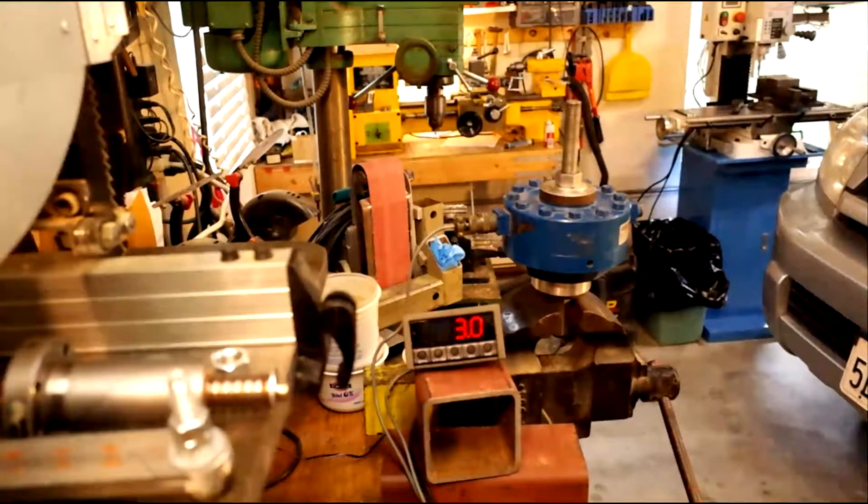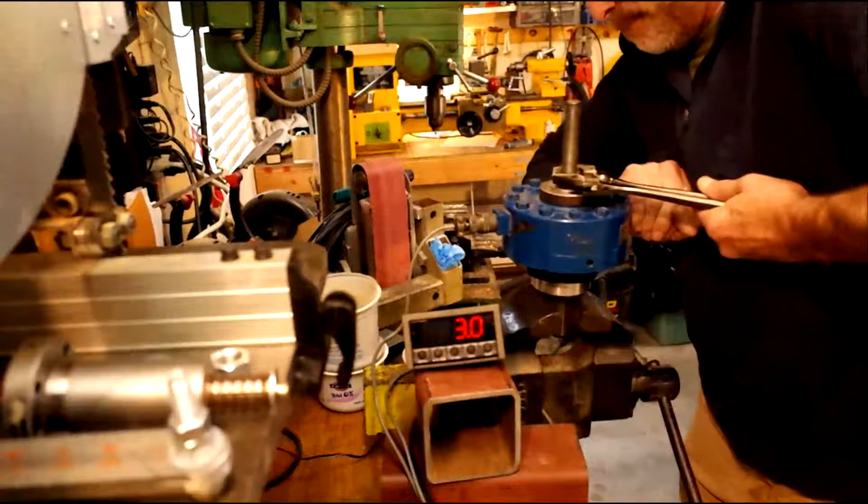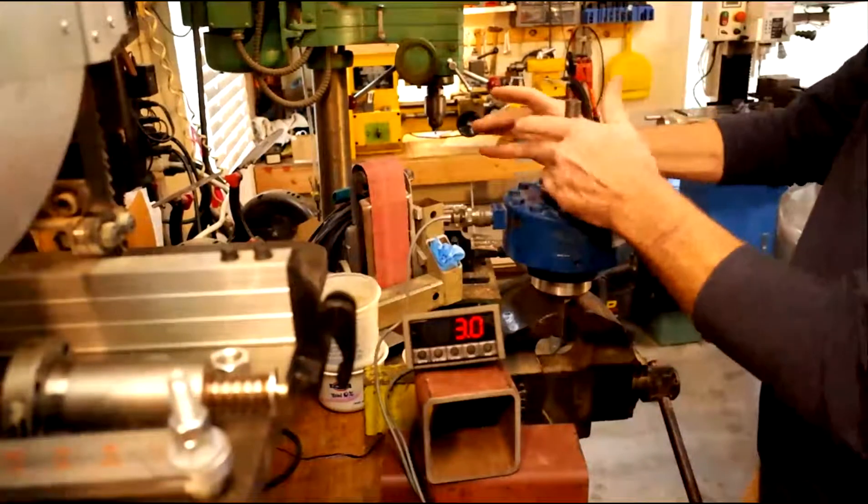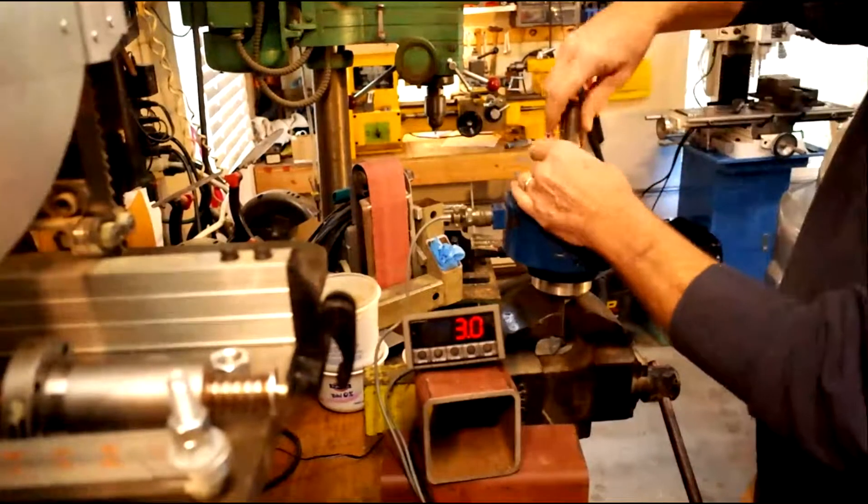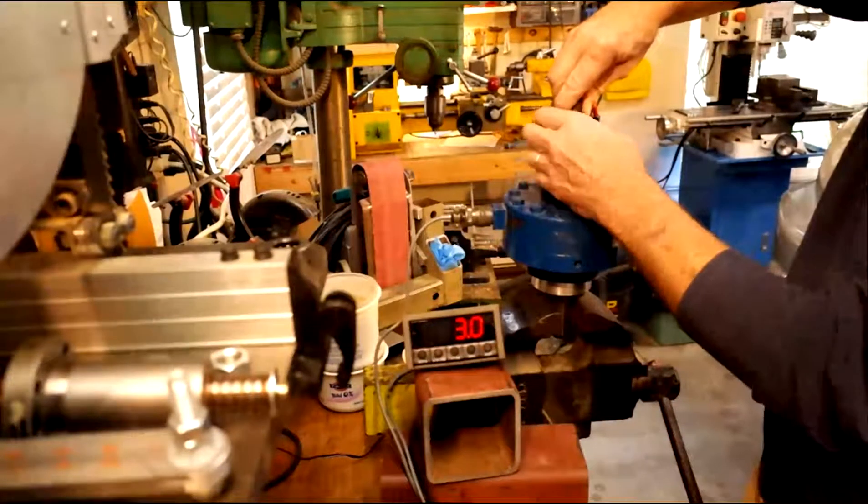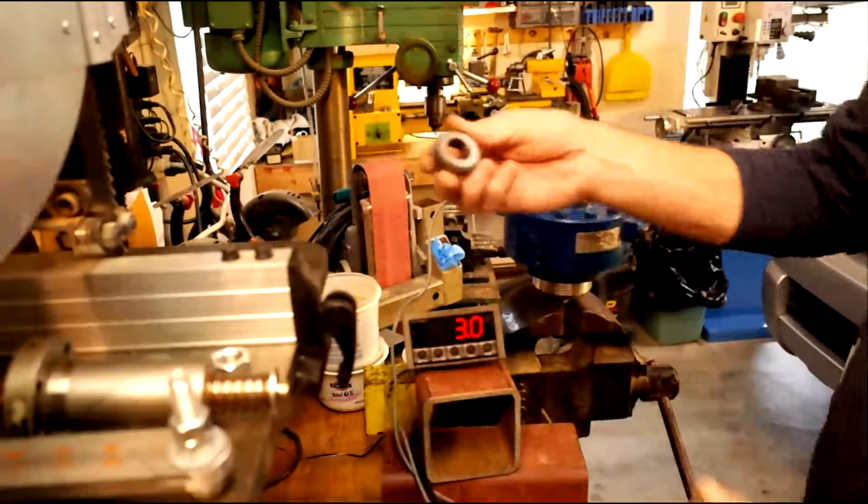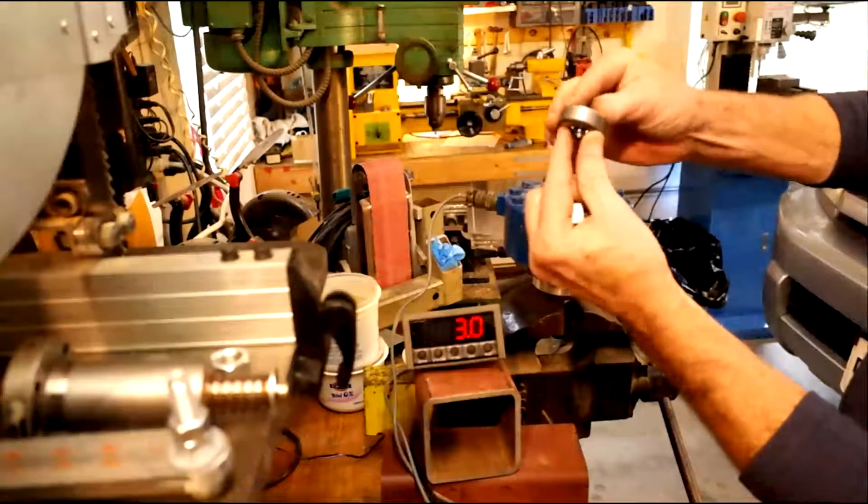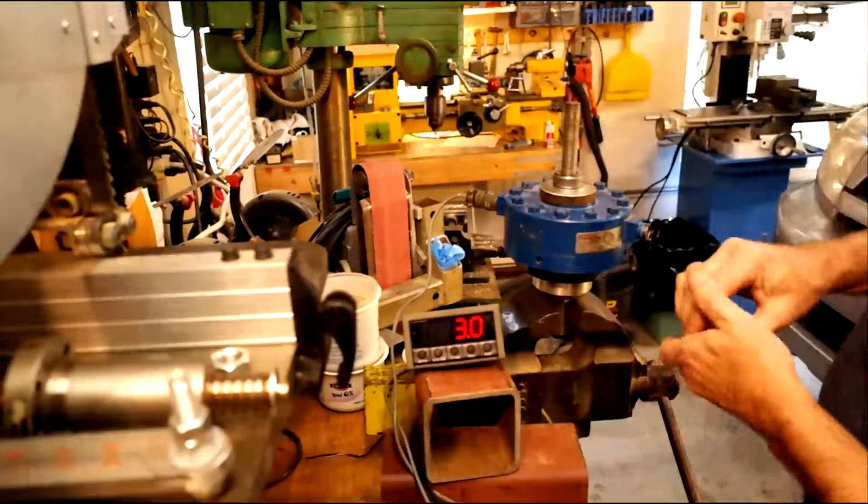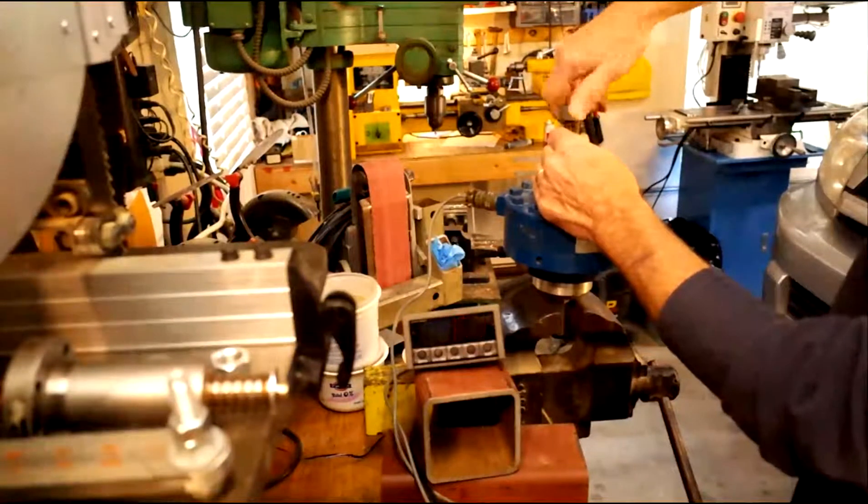So we're going to try that again. But we're going to put a thrust bearing between the nut and the washers. Okay. So this is just a thrust bearing. So the two faces rotate freely. I'm going to put this on top of the washer. And what that does is pretty much eliminates friction between the nut and the washer.